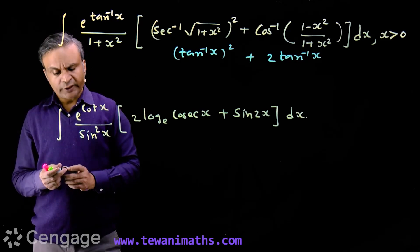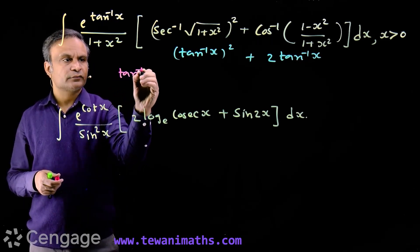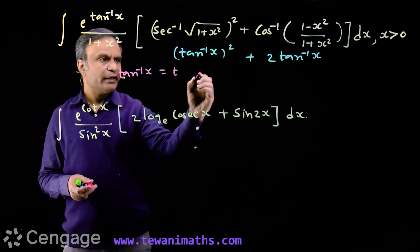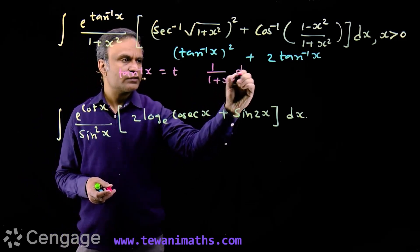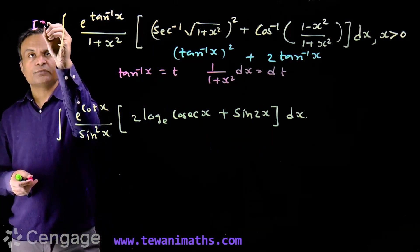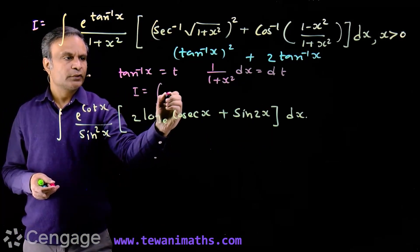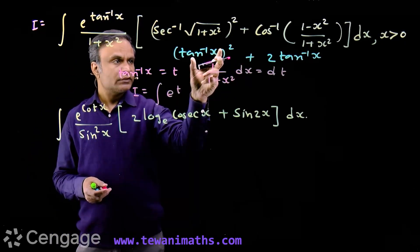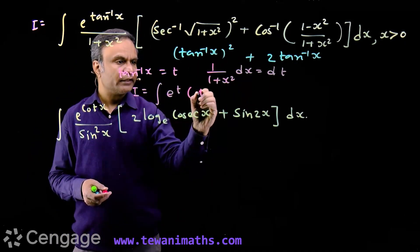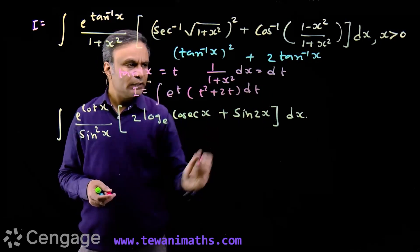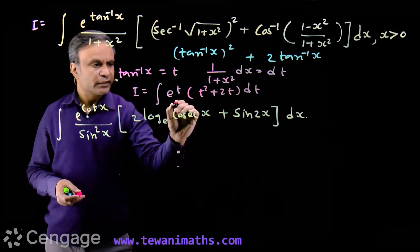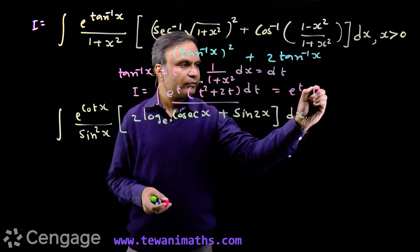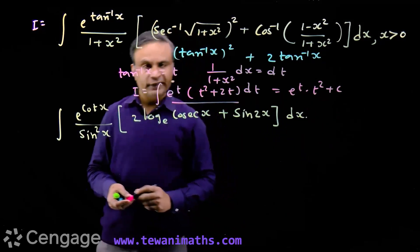So what we do is put tan-inverse x equal to t. Then 1 over (1 plus x squared) dx equals dt. The integral I becomes the integral of e^t dt — where dx over (1 plus x squared) is dt — multiplied by the bracket (t squared plus 2t). Now, 2t is the derivative of t squared. So this integral equals e^t multiplied by t squared, where t is tan-inverse x.